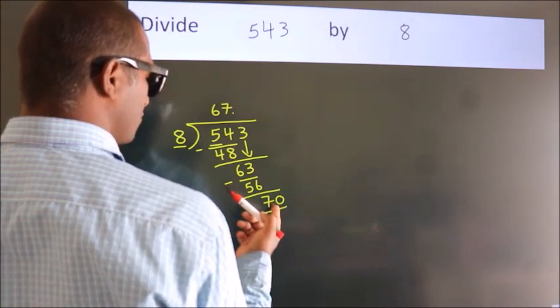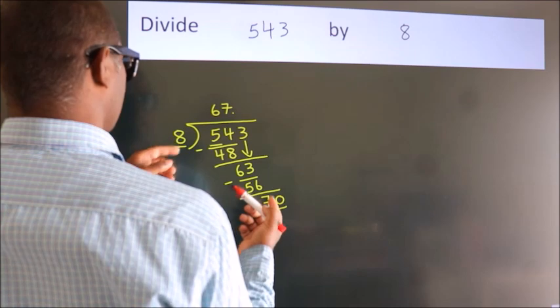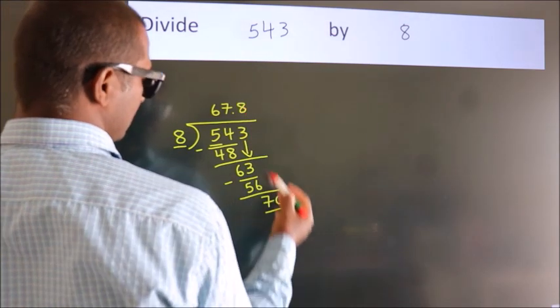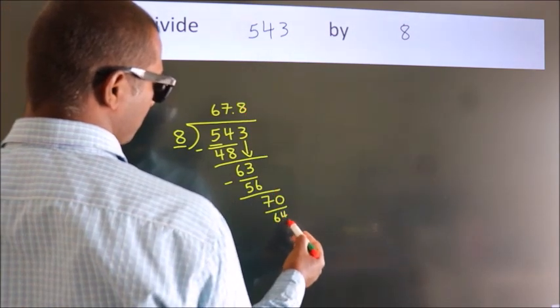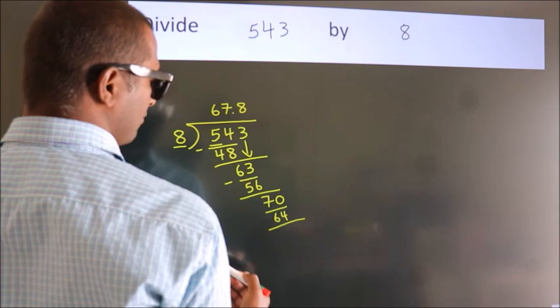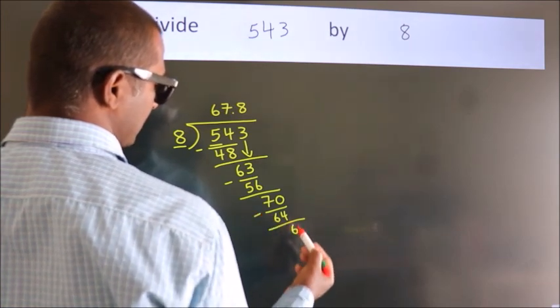A number close to 70 in the 8 table is 8 times 8 equals 64. Now we subtract. We get 6.